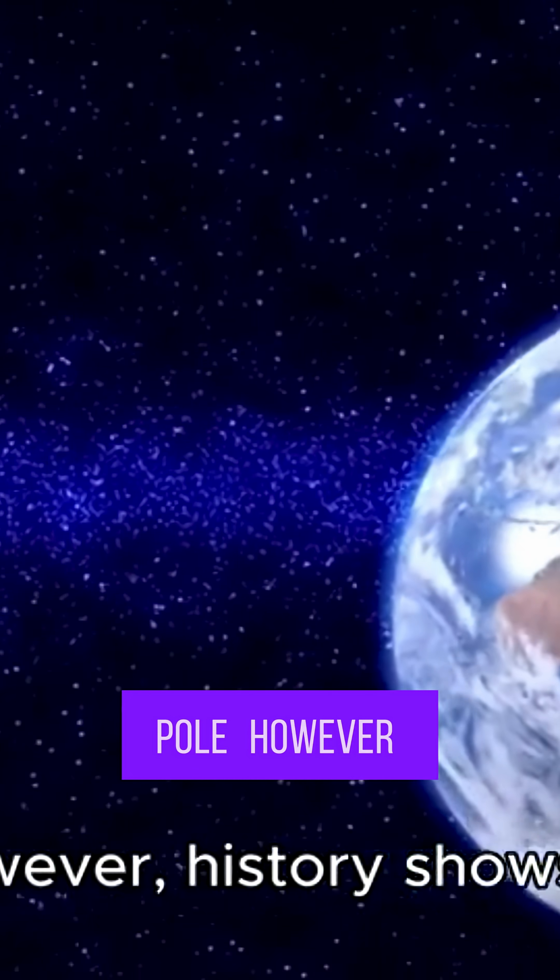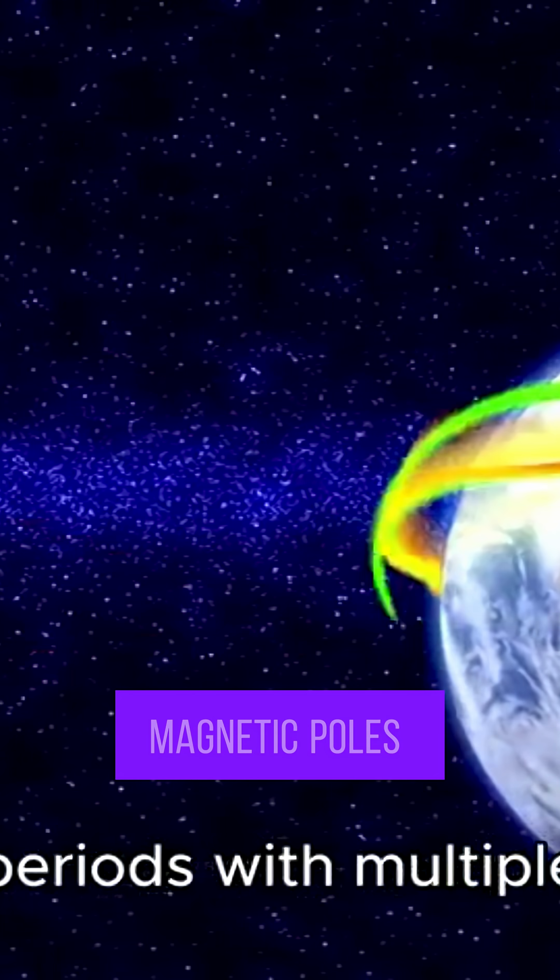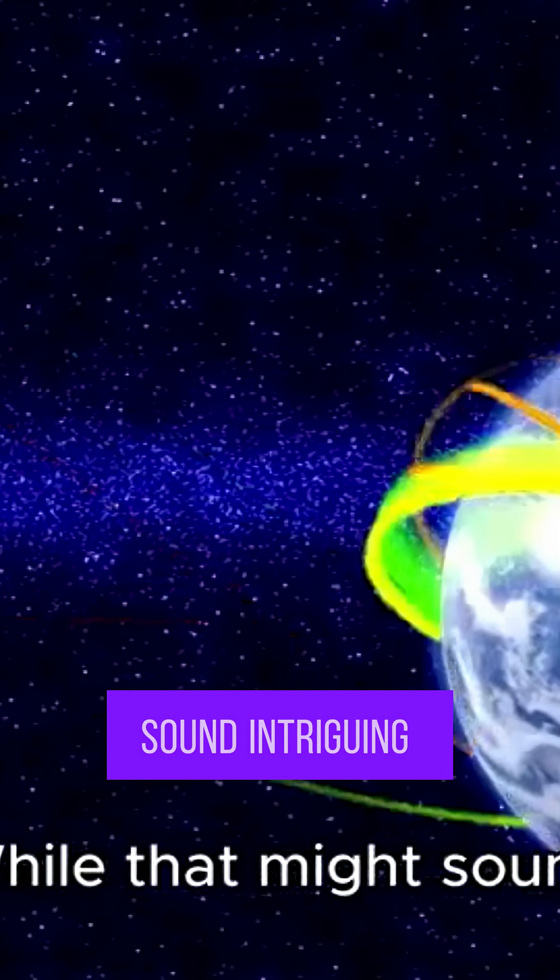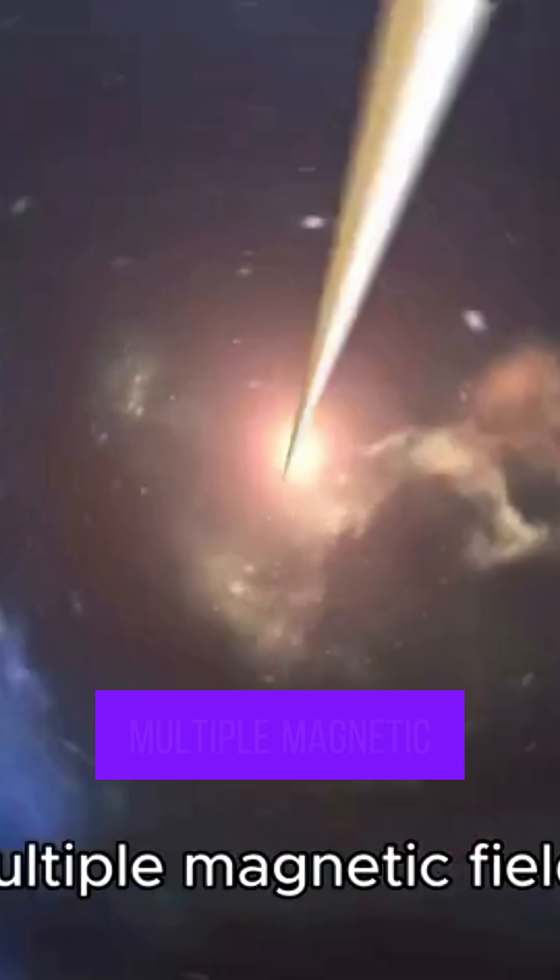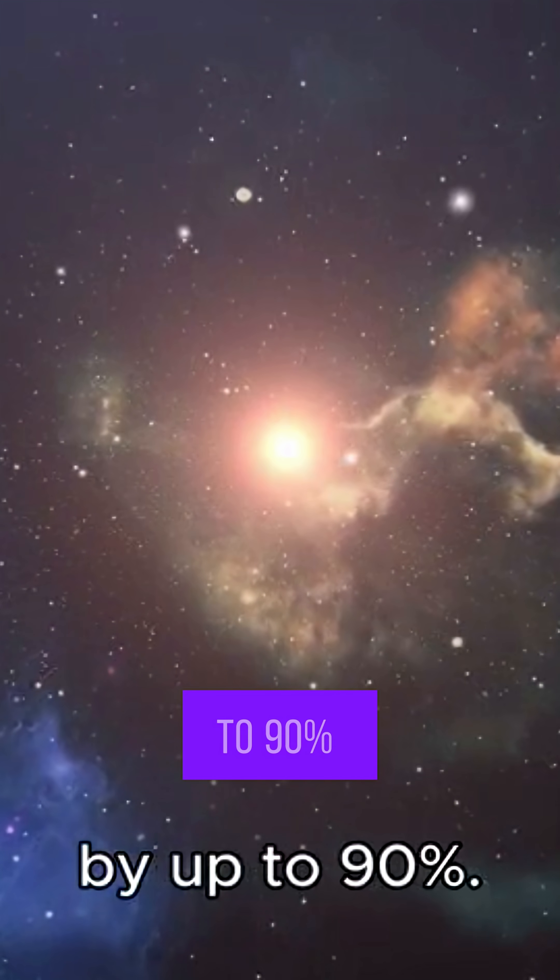However, history shows that Earth has experienced periods with multiple magnetic poles – sometimes four, six, or even eight at a time. While that might sound intriguing, it's actually concerning. Multiple magnetic fields could clash, weakening our protective magnetic shield by up to 90 percent.